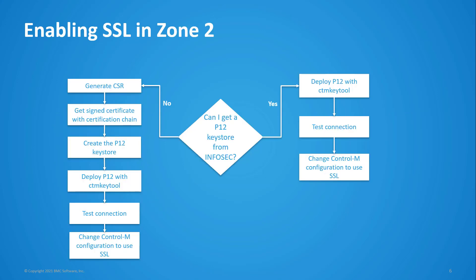Here is a diagram showing the process for enabling SSL in Zone 2. If you are unable to obtain a P12 keystore from InfoSec, you will need to perform the steps on the left of the diagram. This starts with generating a CSR or certificate signing request, getting a signed certificate with a certification chain, creating the P12 keystore, then deploying the P12 keystore with the CTM key tool utility, testing the connection, then changing the Control-M configuration to use SSL. If you are able to get a P12 keystore from InfoSec, then you only need to perform the steps on the right: deploy the P12 keystore, test the connection, then change the Control-M configuration to use SSL.